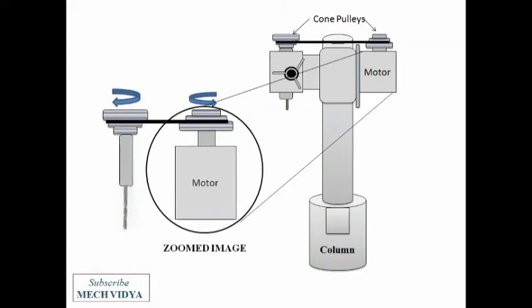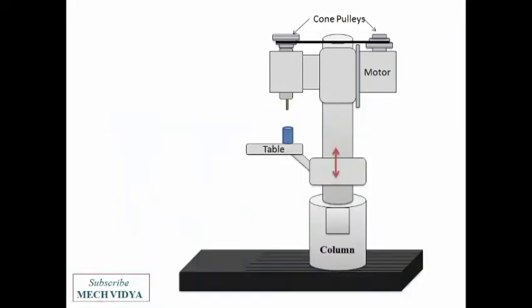Okay next, the drill bit can be moved up and down. This movement takes place by rack and pinion method with the help of this wheel.